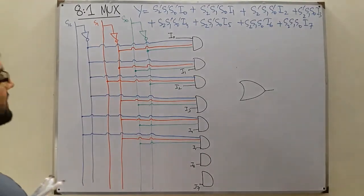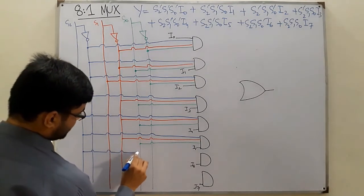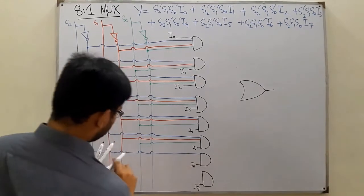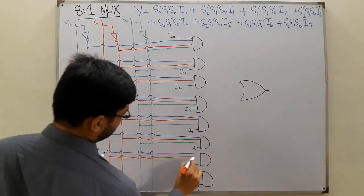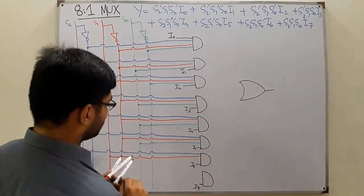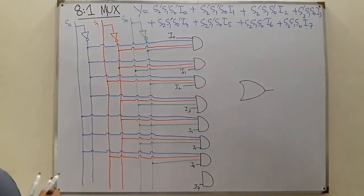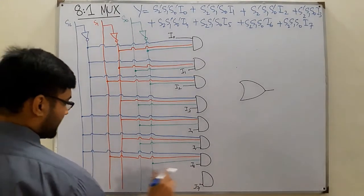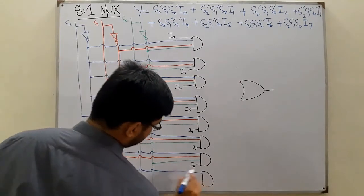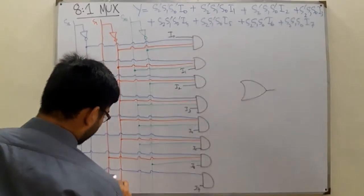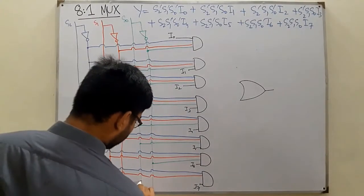For the seventh gate — corresponding to I6 — we have S2, S1 directly, and S0's complement. And finally for the eighth gate — corresponding to I7 — all select lines are high: S2, S1, and S0 all connected directly.